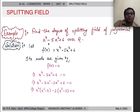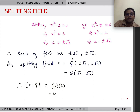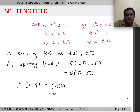Example 4: Find the degree of the splitting field of f(x) = x⁴ - 5x² + 6 over ℚ. Setting f(x) = 0, we factor: (x² - 3)(x² - 2) = 0. This gives x = ±√3 or x = ±√2. The splitting field F is obtained by adjoining √2 and √3 to ℚ. Therefore the degree of this splitting field F over ℚ is 2 × 2 = 4.